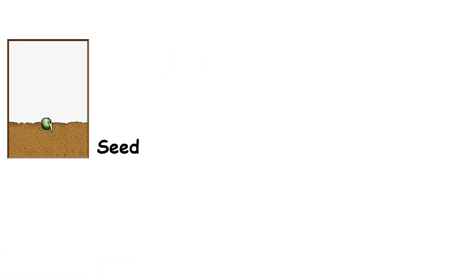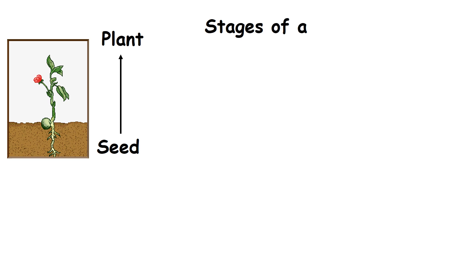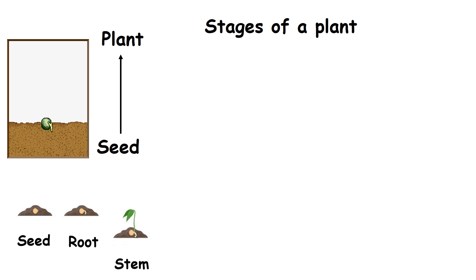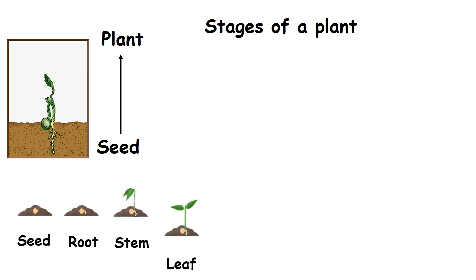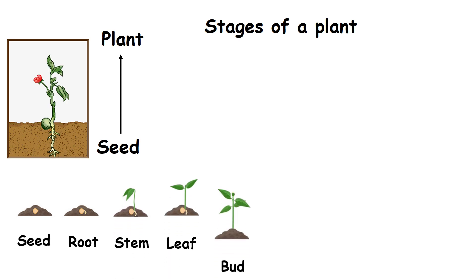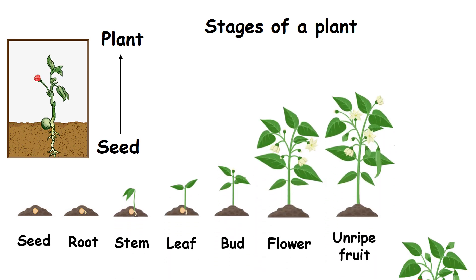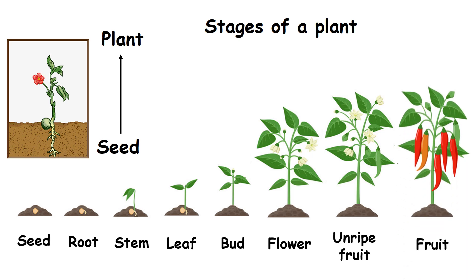Plants grow from a seed. Stages of a plant are seed, root, stem, leaf, bud, flower and fruit.